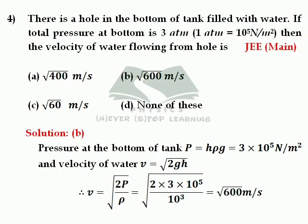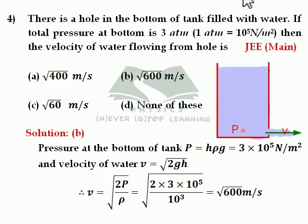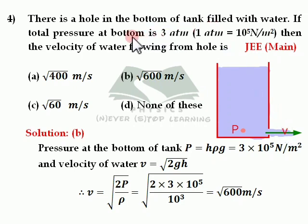Question number 4. There is a hole in the bottom of a tank filled with water. If the total pressure at the bottom is 3 atmospheric pressure, then the velocity of water flowing from the hole is what? You need to consider a tank with a hole at the bottom, and the pressure at the bottom is given as 3 atmospheric pressure.